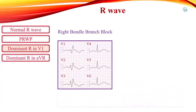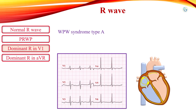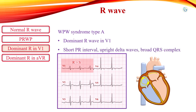Dominant R-wave with RSR-prime pattern, broad QRS complex with M-shaped morphology in V1, is observed in right bundle branch block. In Wolf-Parkinson-White syndrome type A, rightward depolarization due to electrical conduction through a left-sided accessory pathway can be seen as a dominant R-wave in right precordial leads, with a short PR interval, slurred upstroke of the QRS complex seen as a delta wave, and broad QRS complex.